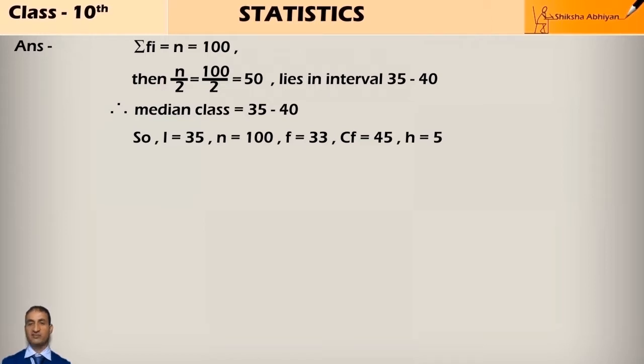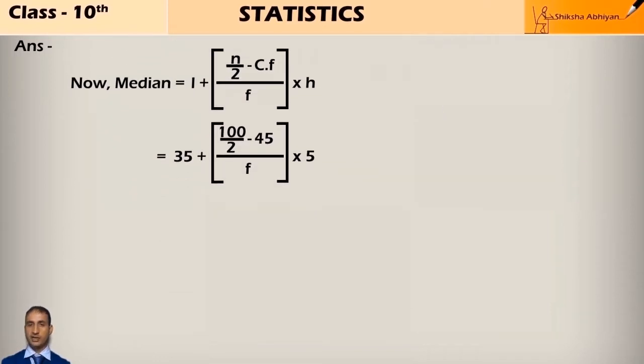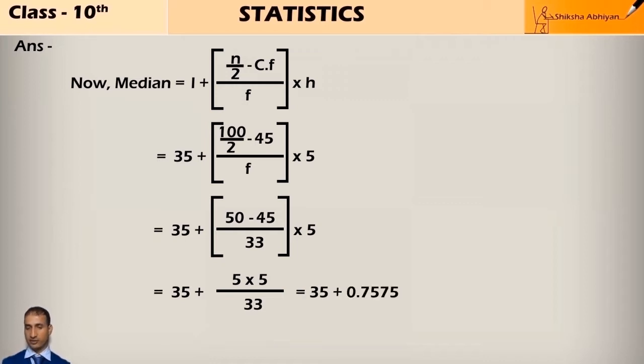And cf, cumulative frequency of the previous class of median class, is 45, and h equals 5. Now using the median formula, we will put all values: 35 plus 50 minus 45 upon 33 into 5, that will come 5 into 5 upon 33, that is 25 by 33, giving 0.7575.